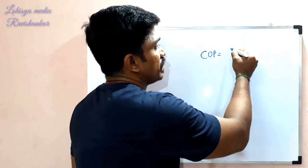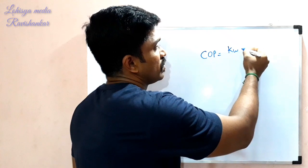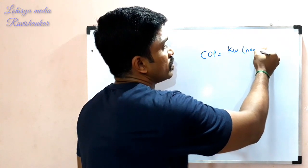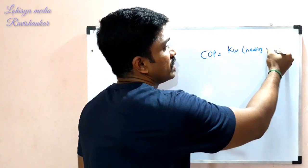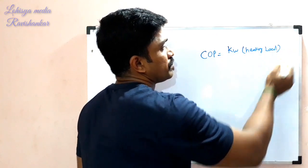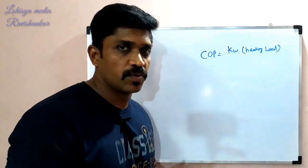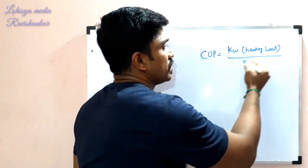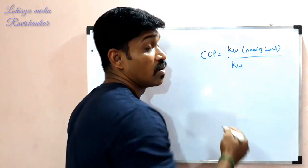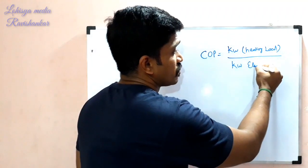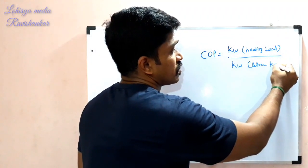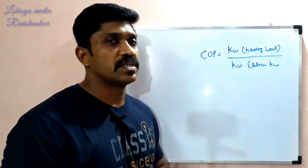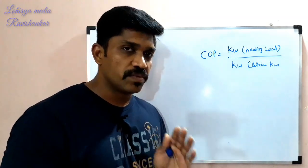COP is the heating load the chiller generates. The chiller output is the chiller kilowatt — this is how much electrical kilowatt consumption we have. Kilowatt consumption is COP. This is the ratio of COP.